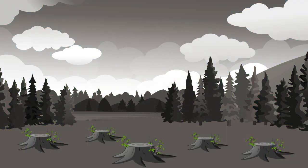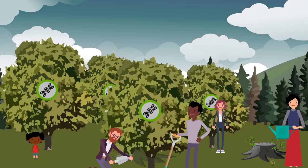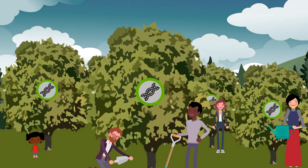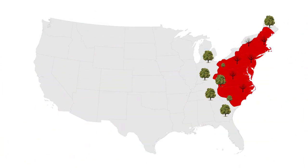Our blight-tolerant American chestnut trees can potentially be used to rescue the remnant population of American chestnuts currently surviving mainly as stump sprouts. Pending federal approval, the blight-tolerant trees can be outcrossed to these surviving mother trees. Continued outcrossing could produce a diverse and blight-tolerant population fully adapted to our forests.